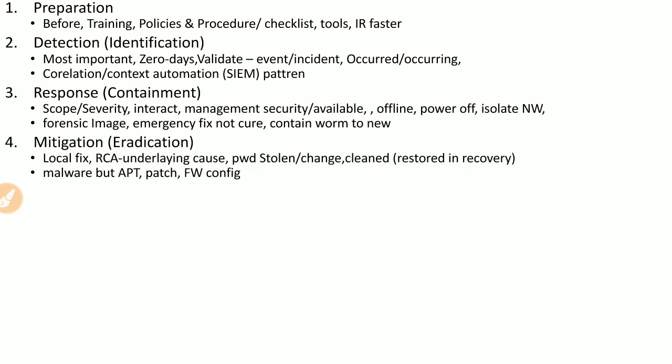The next step is mitigation, which is a local fix where you address the underlying or root cause on the local system. For example, if a stolen password is the root cause, you change the password and clean the system, which can then be restored in the recovery phase. An important concern is Advanced Persistent Threats (APTs), because sometimes a single malware instance is cleaned but its persistence mechanism is not, so you need to identify the entire root cause and all symptoms of infection.